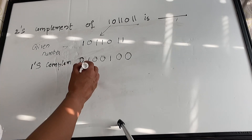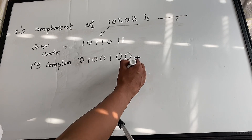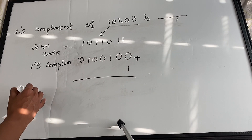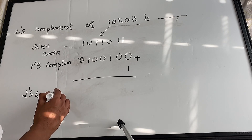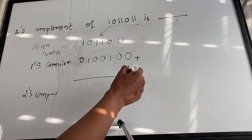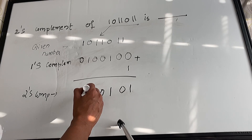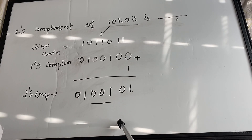To find the two's complement, simply add 1 to the one's complement. Adding 1 to 0100100 gives us 0100101 — wait, the result is 1010010. So the two's complement of the given number is 1010010. This is how you find the two's complement of a binary number.